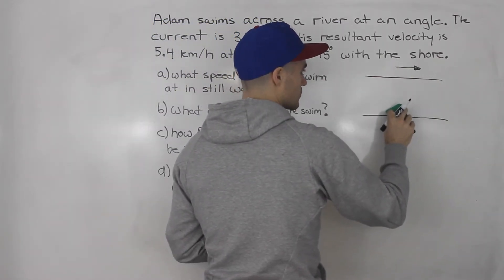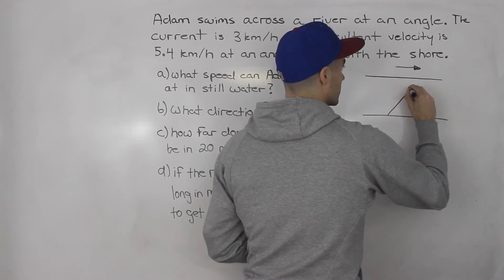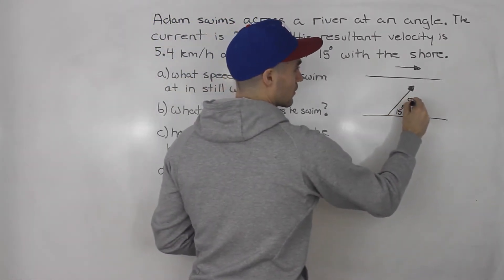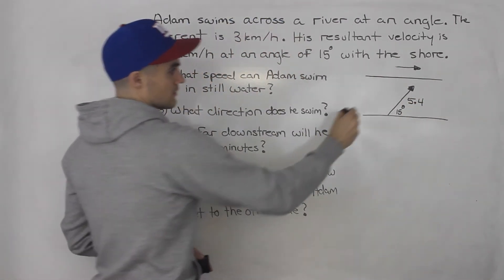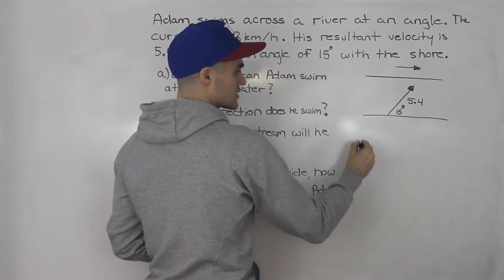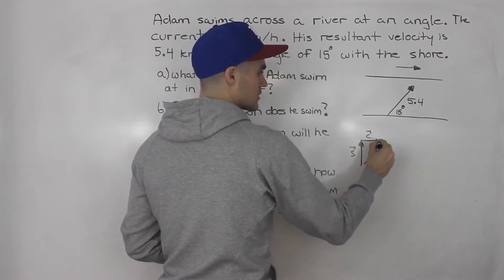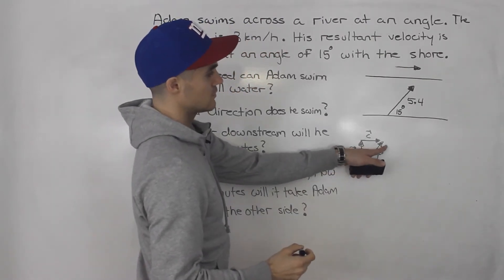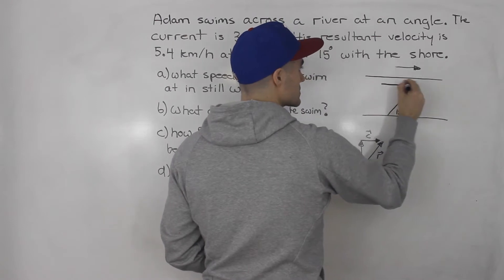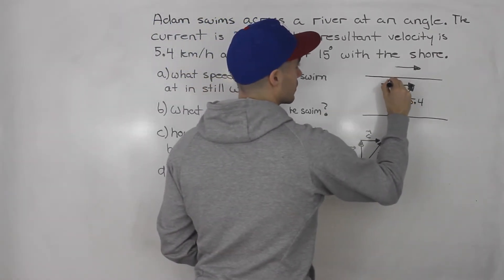Let's start by drawing the resultant velocity — it's going to be 15 degrees with the shore, and it is 5.4 kilometers per hour. What usually happens is we take the swim vector, then we have the current vector, and we end up getting the resultant vector. Notice that attached to the head of the resultant vector is the head of the current vector, and we know the current is going this way — 3 kilometers per hour.